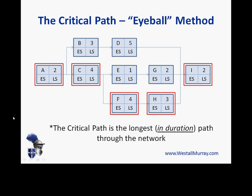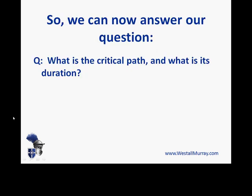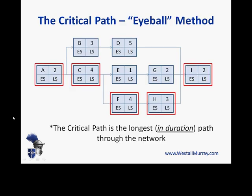Note that the longest path in critical path terms is the longest duration, not the path with the most number of boxes. Sometimes people think longest path means the greatest number of boxes. In this case, there are two paths — A, C, E, G, I and A, C, F, H, I — both of which have five boxes in them. So that's not how you calculate the critical path; it's the longest duration. We can now answer: what is the critical path and what is its duration? It's A, C, F, H, I — 15 days.